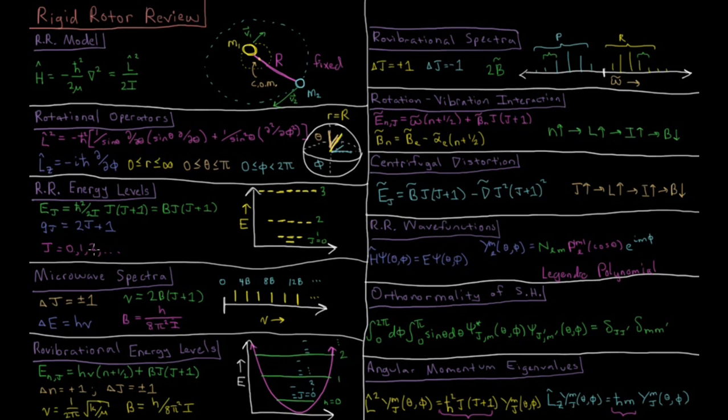j is an integer which starts at 0 and goes up from there. This system is a nice model for explaining the microwave spectra of diatomic molecules. We have a selection rule for microwave spectroscopy, or rotational spectroscopy, that the change in the rotational quantum number j, or L, is plus or minus 1.